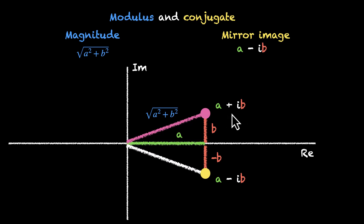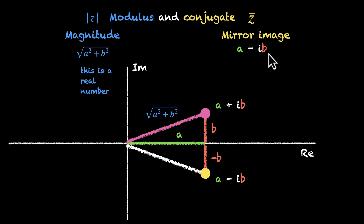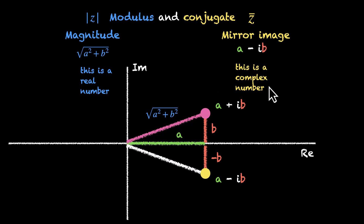So the magnitude or mod is √(a² + b²), and the conjugate or mirror image is a − ib — the plus sign becomes the minus sign. This is how we write mod of z, and this is how we write z-bar, or conjugate of z. Mod z is a real number, and the conjugate is a complex number. So mod is real and conjugate is complex.